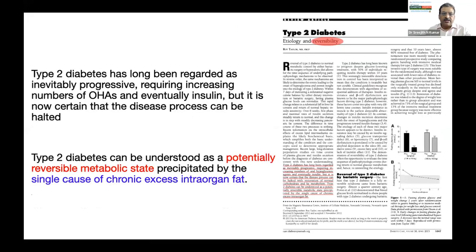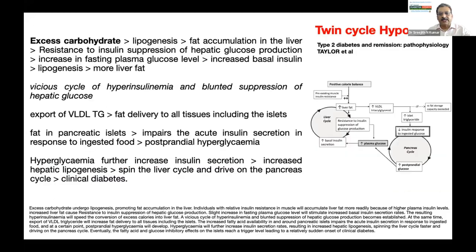Type 2 diabetes has long been regarded as inevitably progressive, requiring increasing numbers of oral drugs and eventually insulin. But it is now certain that the process can be halted. Type 2 diabetes can be understood as a potentially reversible metabolic state precipitated by the single cause of chronic excess intra-organ fat.